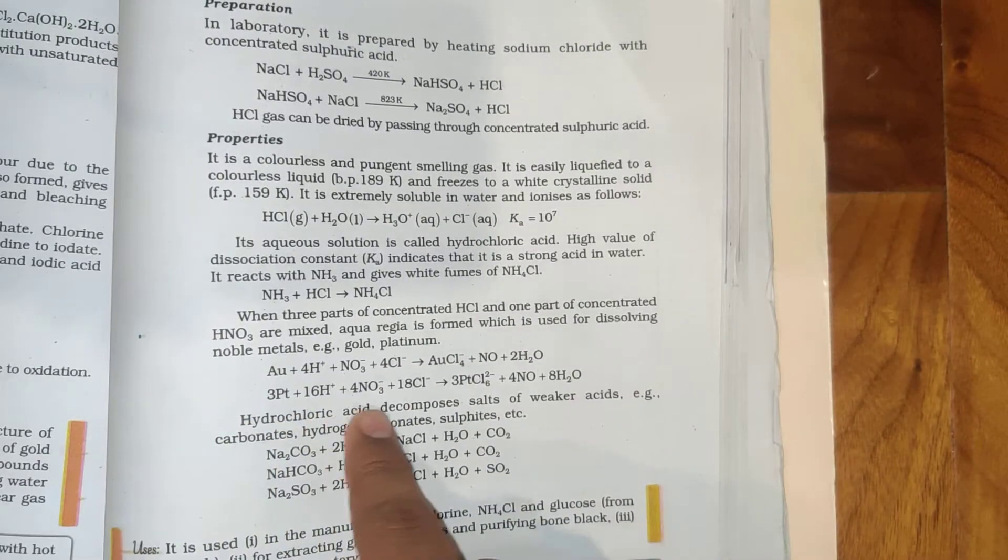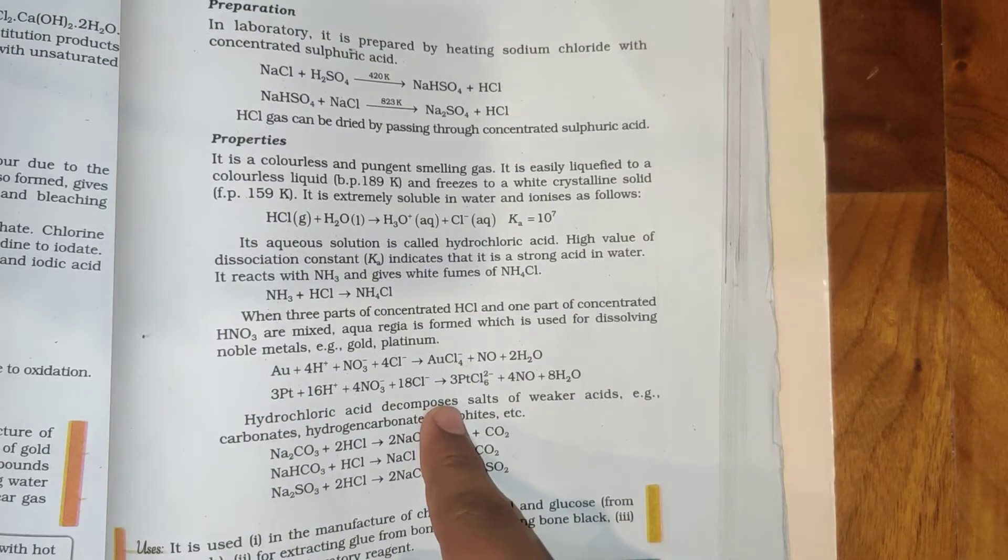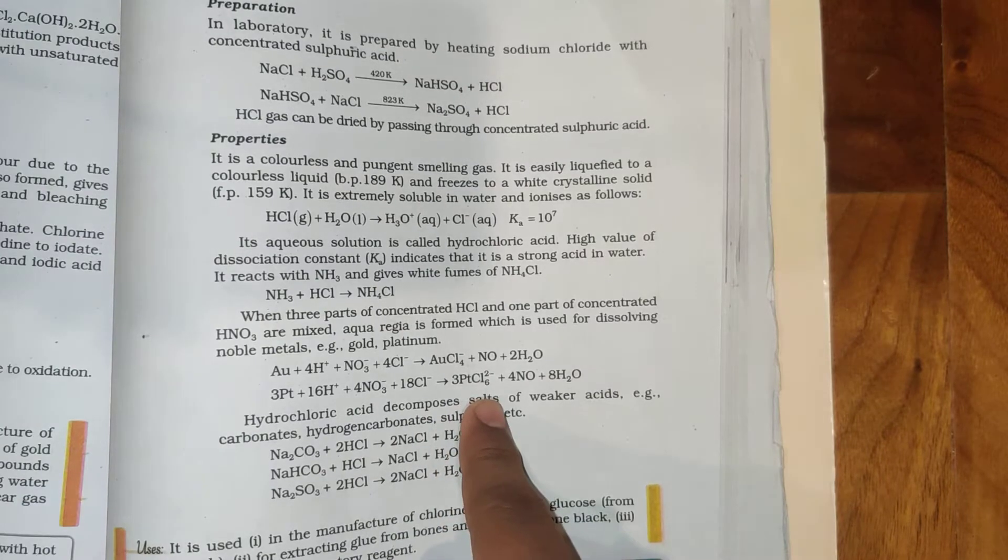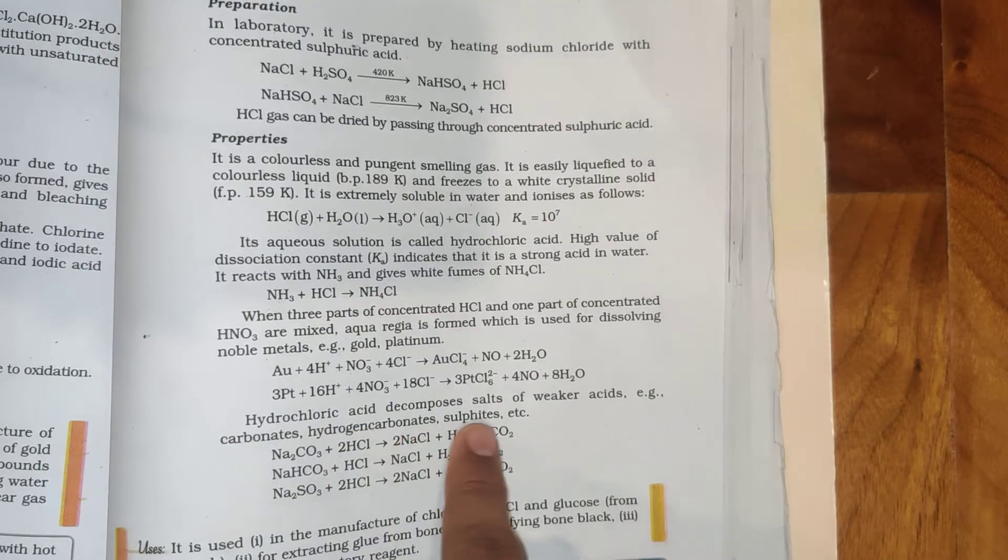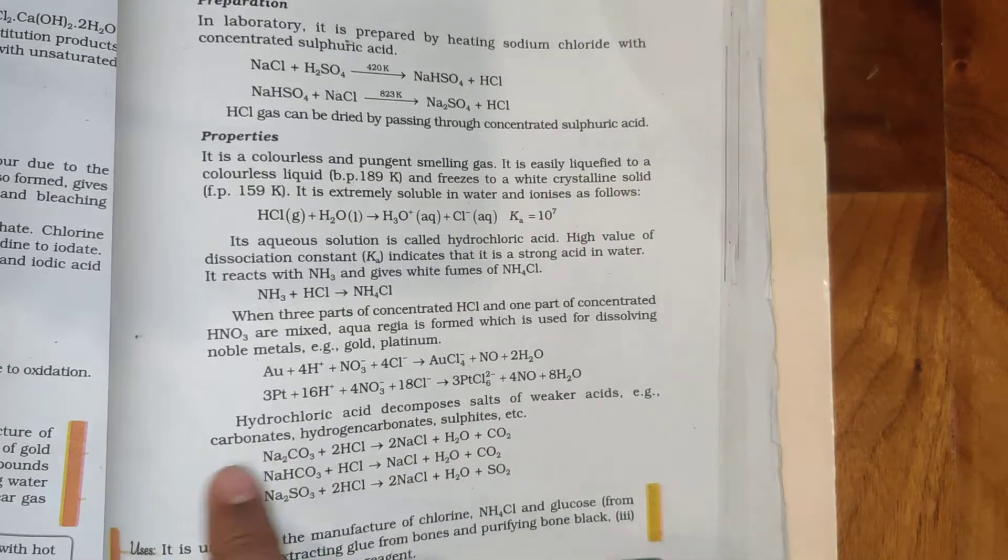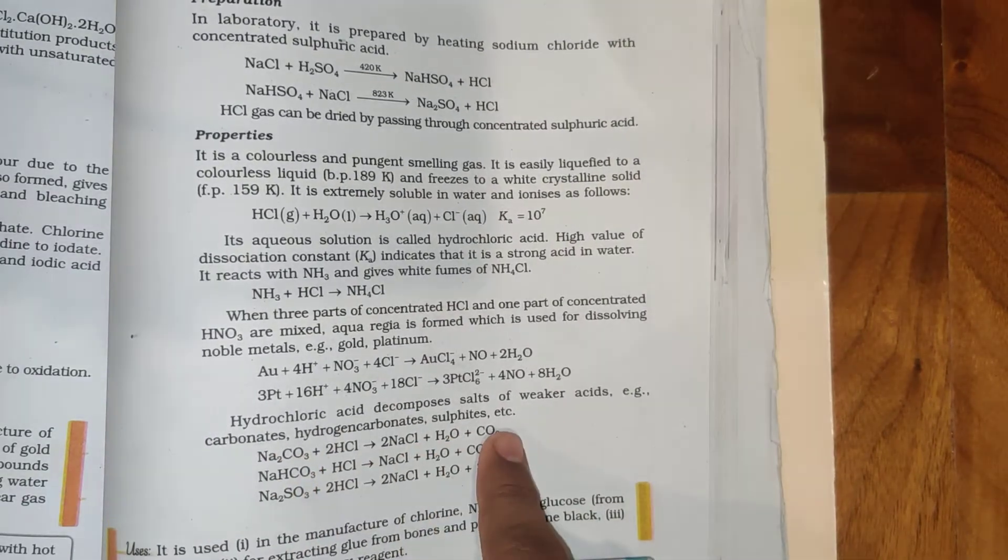3Pt plus 16H plus plus 4NO3 minus plus 18Cl minus gives 3PtCl6 power 2 minus plus 4NO plus 8H2O. Hydrochloric acid decomposes salts of weaker acids, e.g. carbonates, hydrogen carbonates, sulfides, etc.